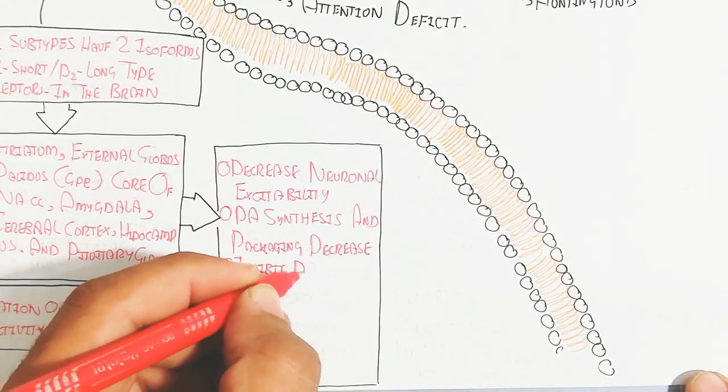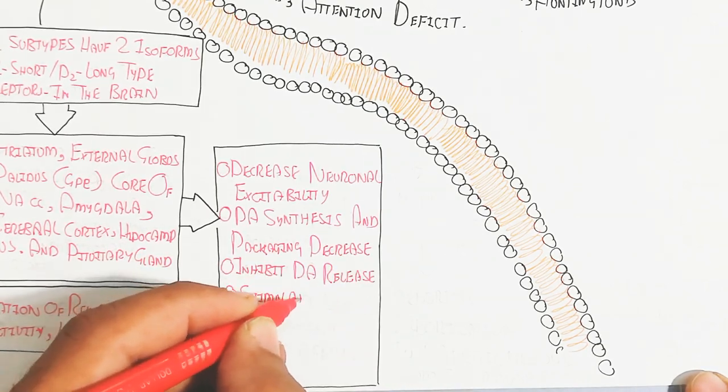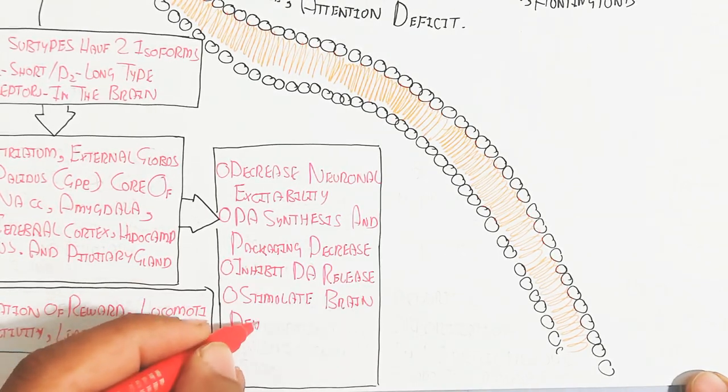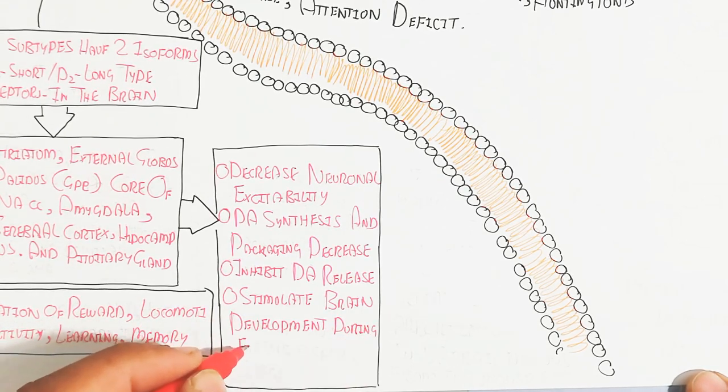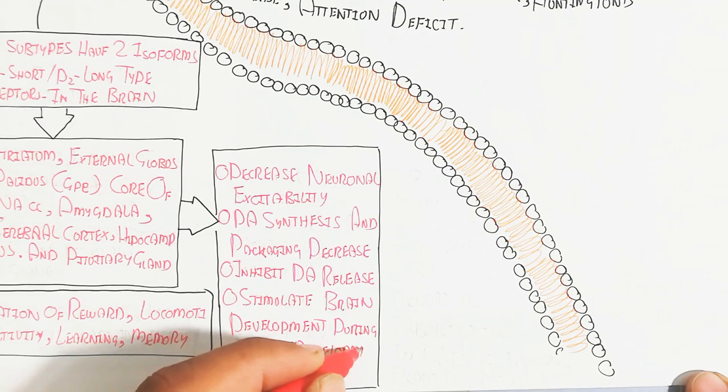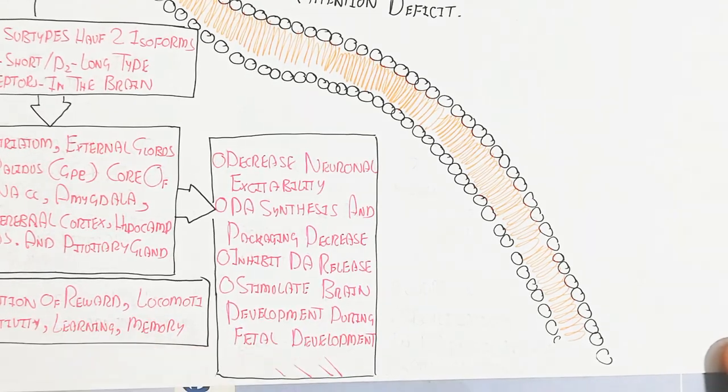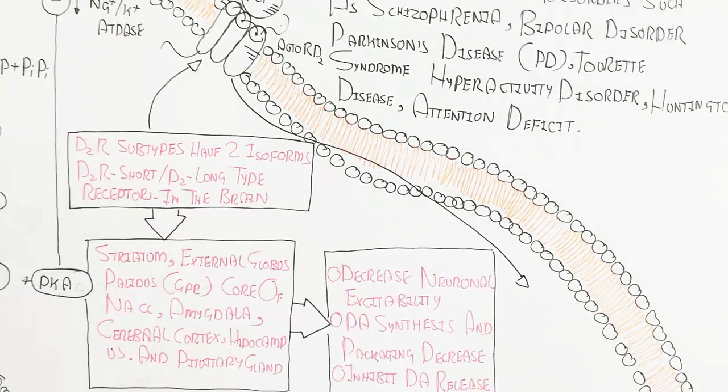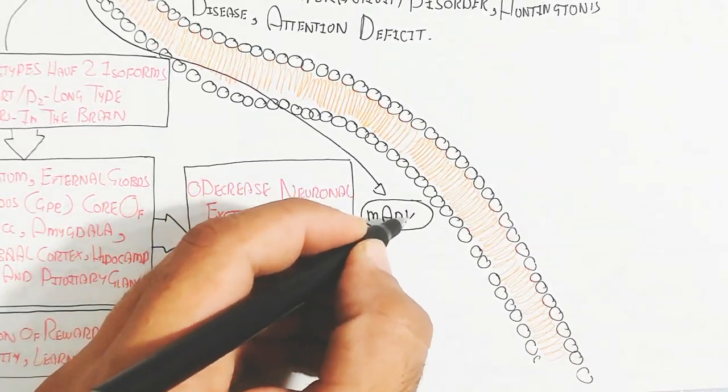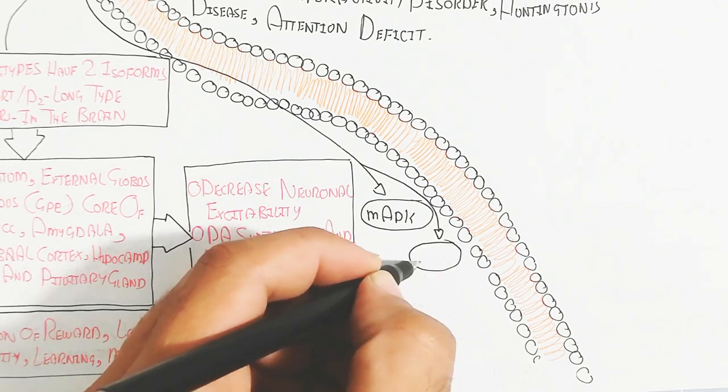It stimulates brain development during fetal development because it decreases neuronal excitability but allows rest for neurogenesis as well as synaptogenesis. Neuroplasticity means the synapses will increase for more learning and more memorization.